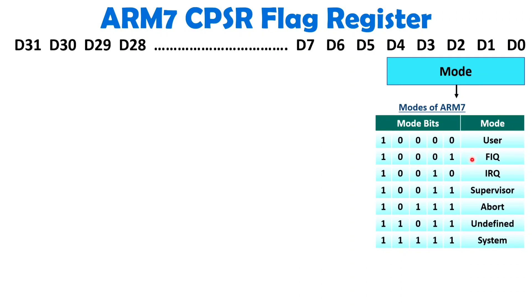The 7 operating modes are: User mode, Fast Interrupt mode, Normal Interrupt mode, Supervisor mode, Abort mode, Undefined mode, and System mode. In total we have 7 modes, and by using these mode bits we can identify which mode ARM7 is currently in. There is a separate video in the playlist for a detailed explanation of these modes.